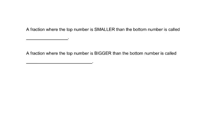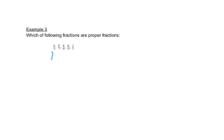A fraction where the top number is smaller than the bottom number is called a proper fraction. A fraction where the top number is bigger is called an improper fraction.